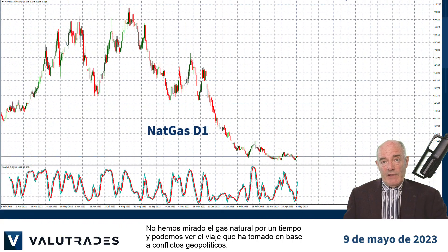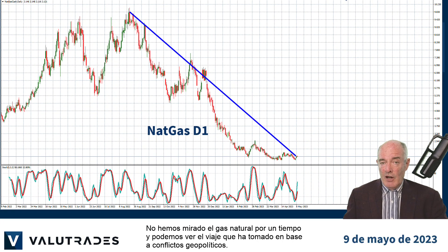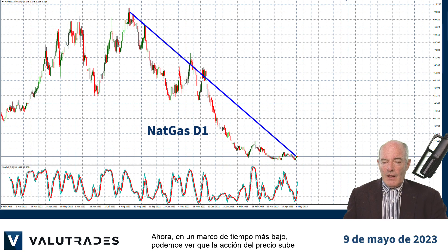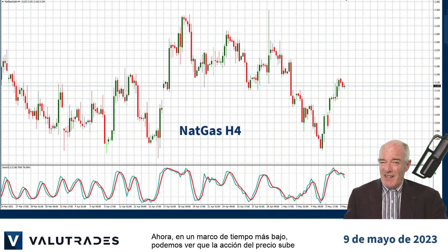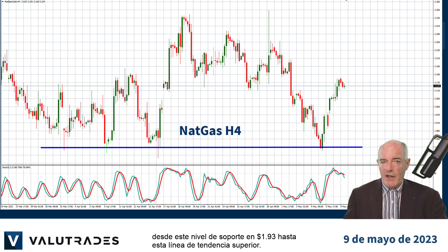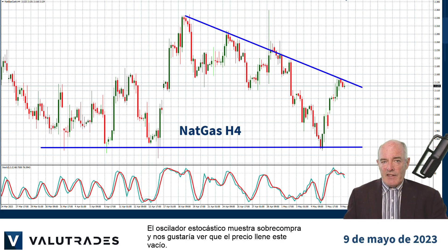We haven't looked at Natural Gas for a while, and we can see the journey it has taken on geopolitical conflicts. Now on a lower time frame we can see price action rising from this level of support at $1.93 to this upper trend line. The Stochastic Oscillator is showing overbought and we would like to see this price gap filled.